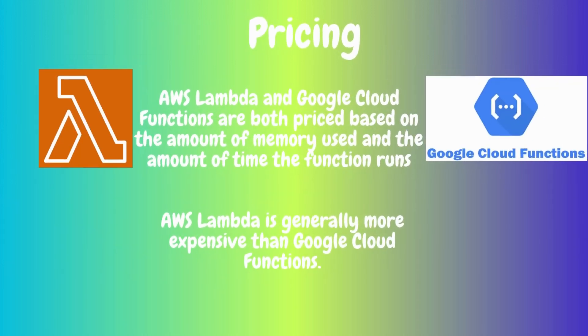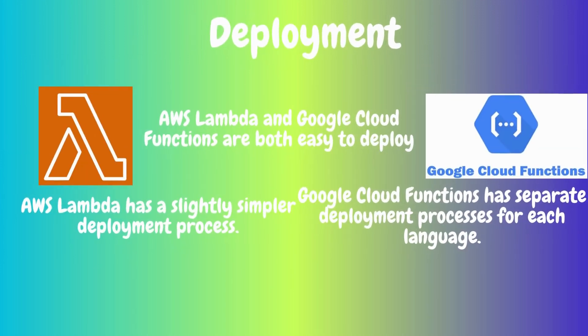Coming to pricing, both AWS Lambda and Google Cloud Functions are priced based on the amount of memory used and the time the function runs. AWS Lambda is generally more expensive than Google Cloud Functions because Lambda charges for the first 100 milliseconds of execution time, even if the function only runs for a few milliseconds. Google Cloud Functions does not charge for the first 100 milliseconds.